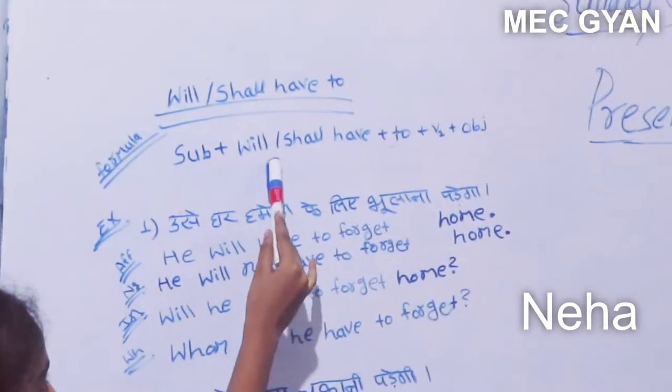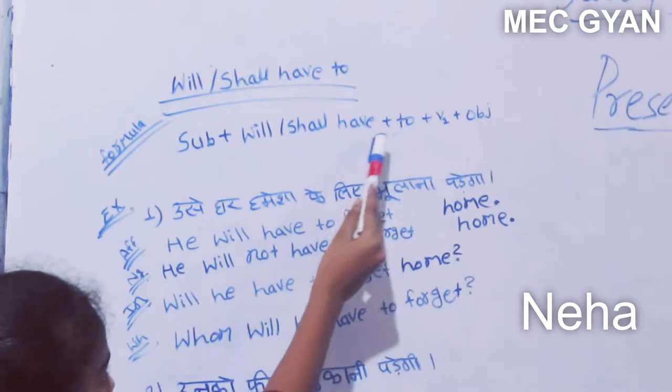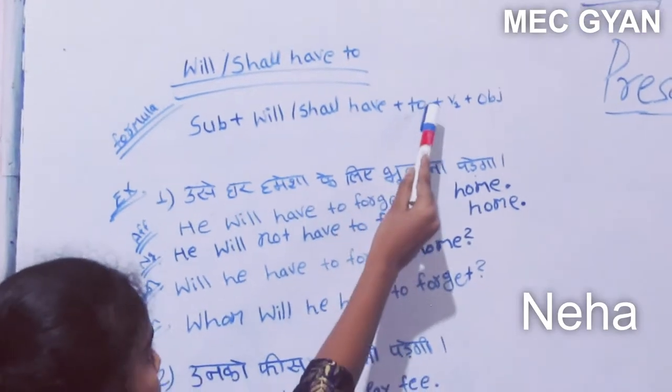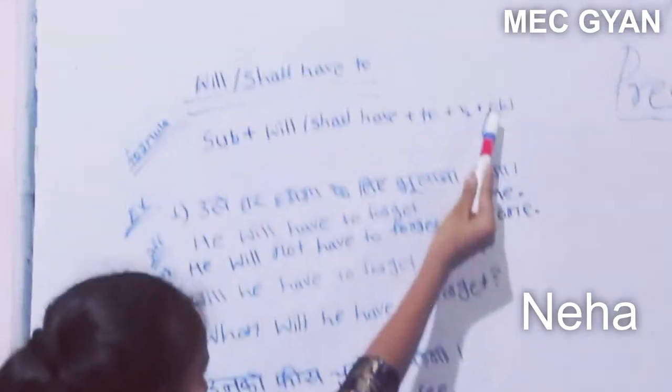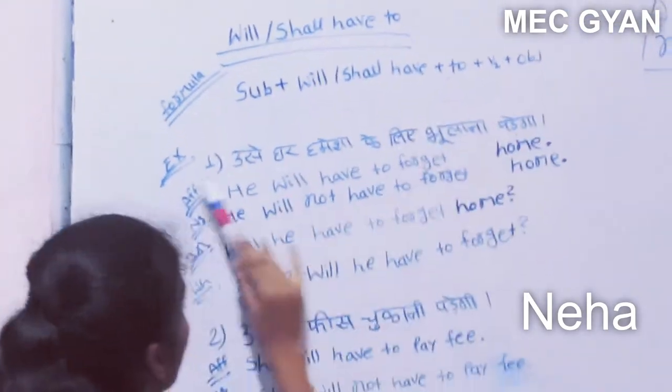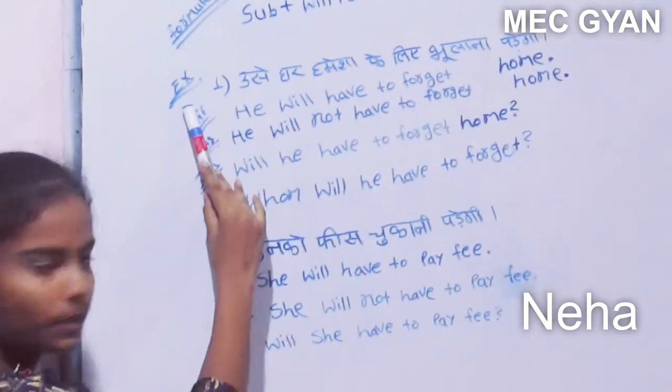The formula is: subject plus 'will have to' plus verb plus object or personal plus objective. An example: